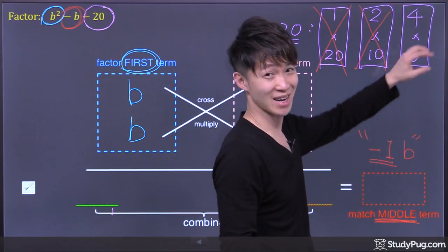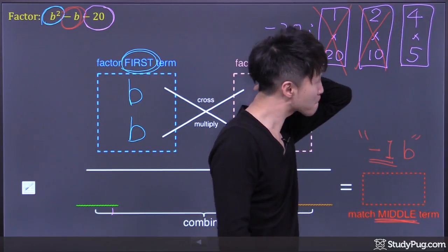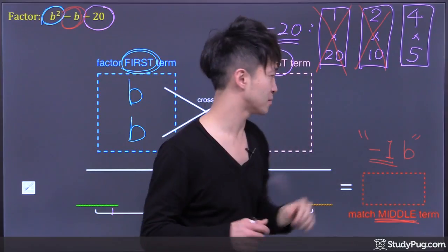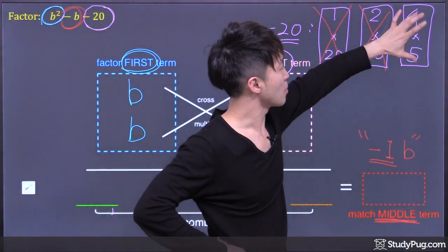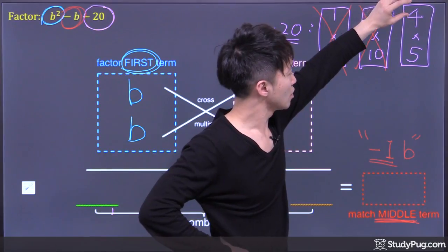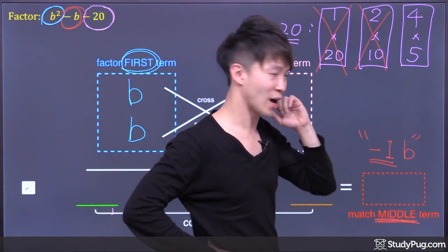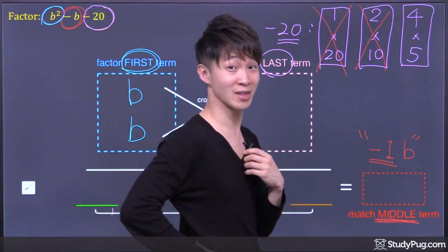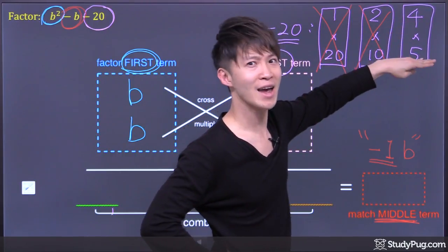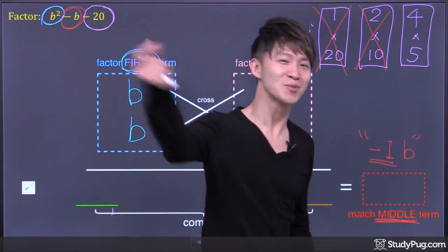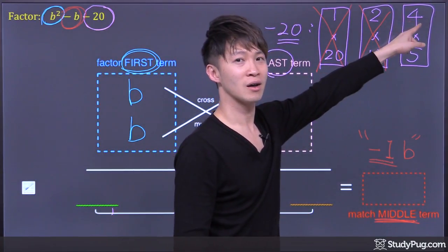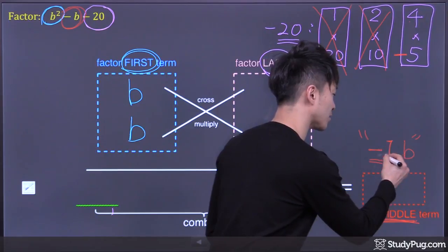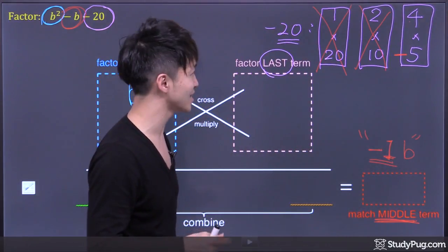Now, how about the last set of factoring? So if we factor 20 into 4 times 5, let's see. Combine the two numbers here. 4 plus 5, we get 9. Still not negative 1. How about if you find the difference between the two numbers? 4 minus 5, we get negative 1. Right there. 4 minus 5, we get negative 1. That's it. So that's the one.